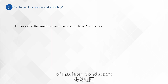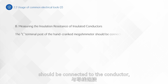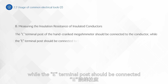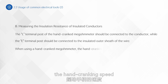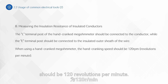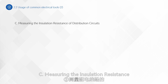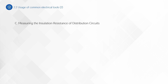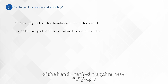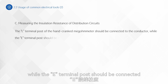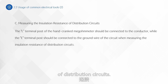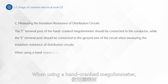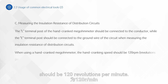When measuring the insulation resistance of insulated conductors, the L-terminal post should be connected to the conductor, while the E-terminal post should be connected to the insulated outer sheath of the wire. The hand-cranking speed should be 120 rpm. When measuring the insulation resistance of distribution circuits, the L-terminal post should be connected to the conductor, while the E-terminal post should be connected to the ground wire of the circuit. The hand-cranking speed should again be 120 rpm.